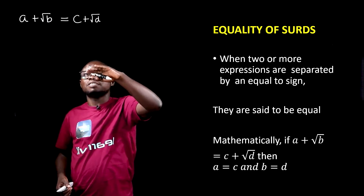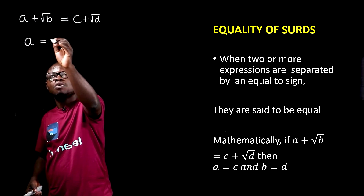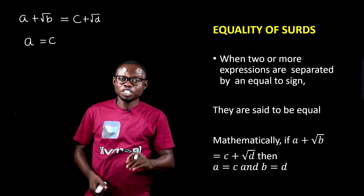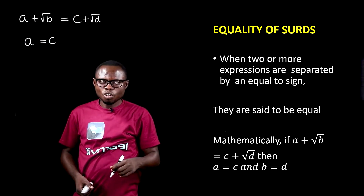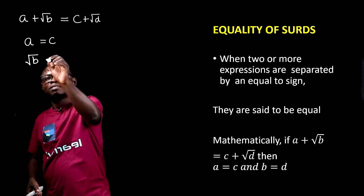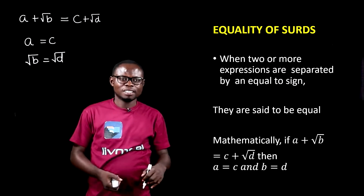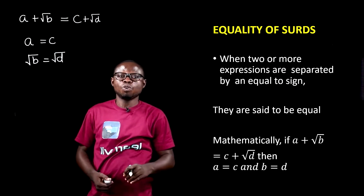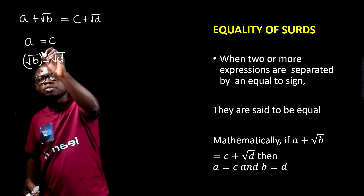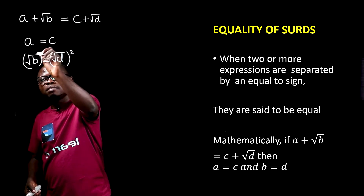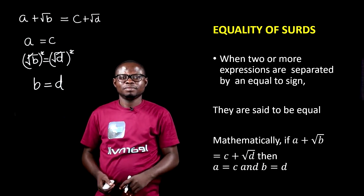Because the left-hand side is equal to the right-hand side, we can write that a is equal to c, which means the rational part of the left-hand side is equal to the rational part of the right-hand side. Also, root b is equal to root d — the irrational part is also equal to the irrational part. From this particular equation, when we square both sides, we get b is equal to d.